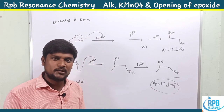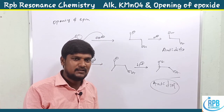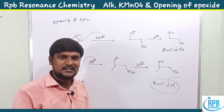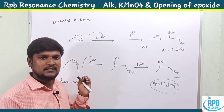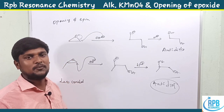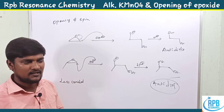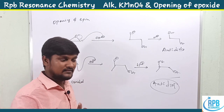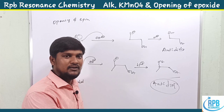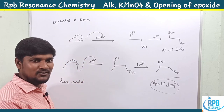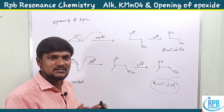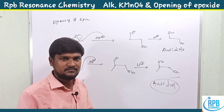This is the fifth reagent for alkene-to-diol formation. In summary, the five reagents are: (1) osmium tetroxide, (2) Woodward, (3) Prévost, (4) KMnO4, and (5) opening of epoxides. That covers all the alkene-to-diol formation reactions. Thank you so much for watching.